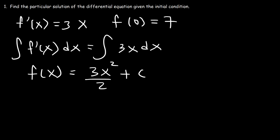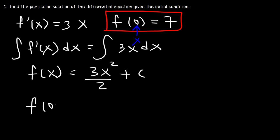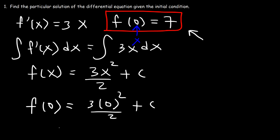Now what we need to do is solve for c. Anytime you want to find a particular solution, you plug in the initial condition. f(0) is 7, so 0 is the x value and 7 is the function value. So f(0) is equal to 3 times 0 squared over 2 plus c. We know f(0) is 7, so 7 is equal to 0 plus c, which means c is equal to 7.